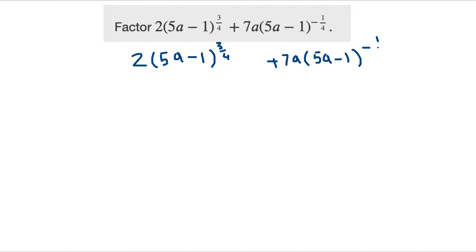Here I see I have 1 over 4 in the exponents. What I can do with this expression is write plus 0. Adding 0 changes nothing, but instead of writing 0, I write 1 over 4 minus 1 over 4, which equals 0. So I have the right to write that.